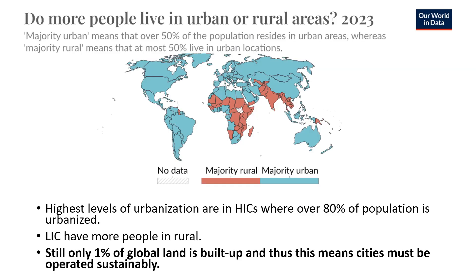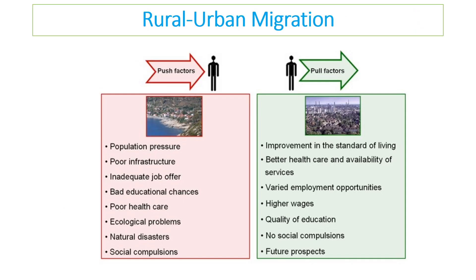Across the world, urban areas are shown in blue and the areas where the majority of people still live in rural areas are shown in red. Only one percent of global land is actually built up, which means cities need to be operated sustainably. But if we did operate sustainably, that would be a benefit for the whole planet.